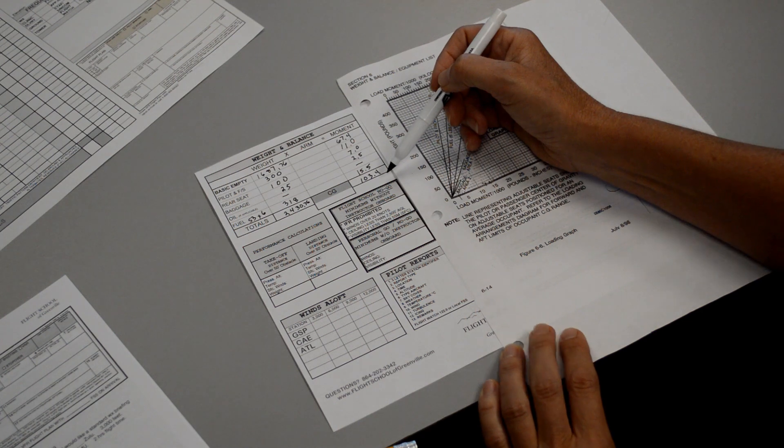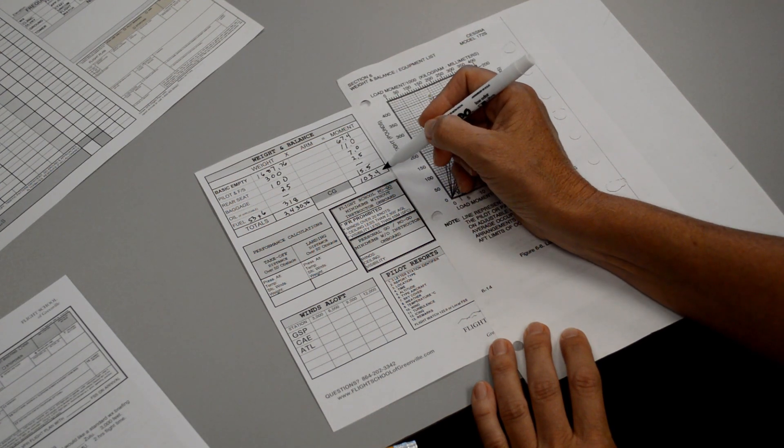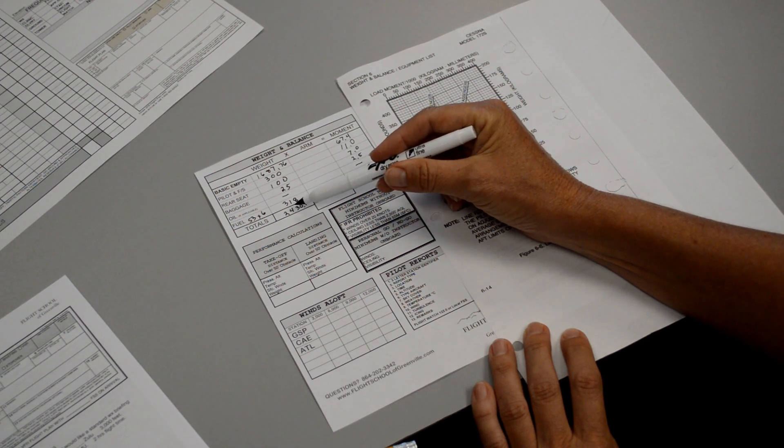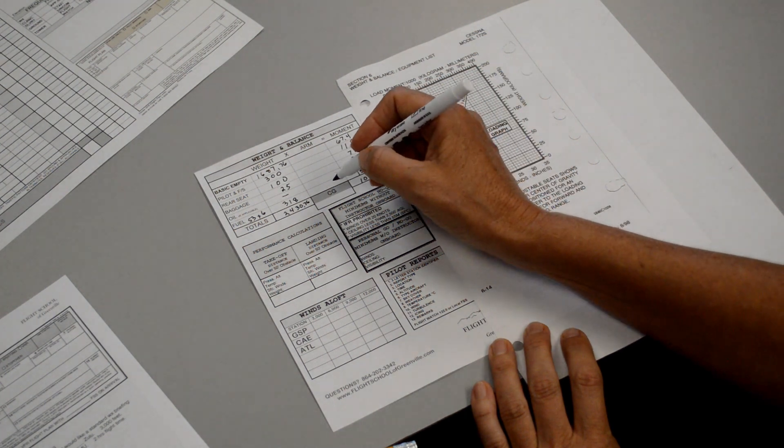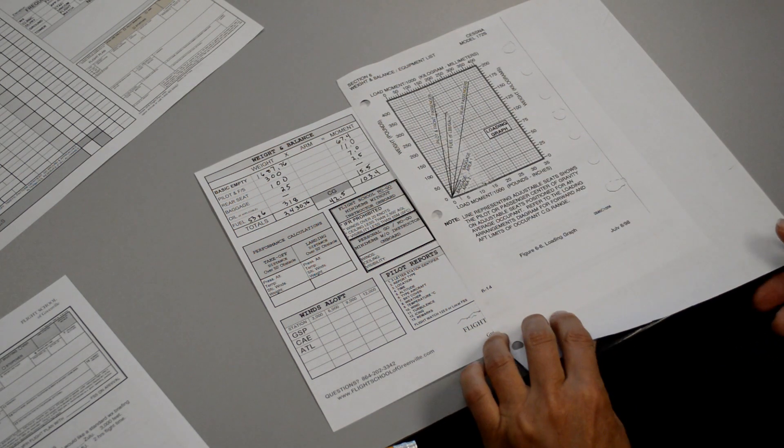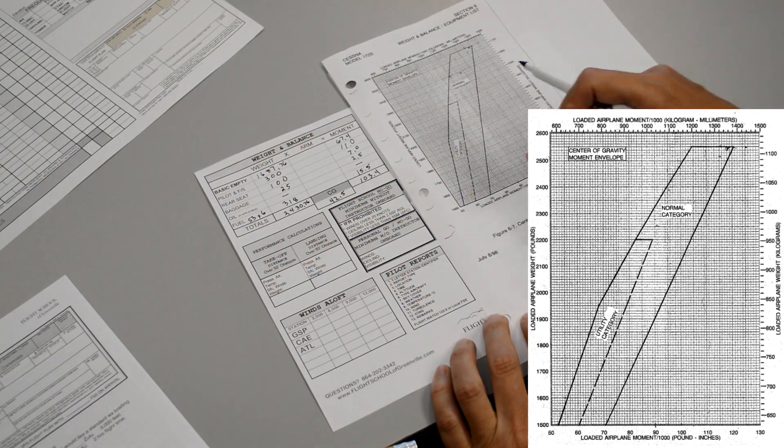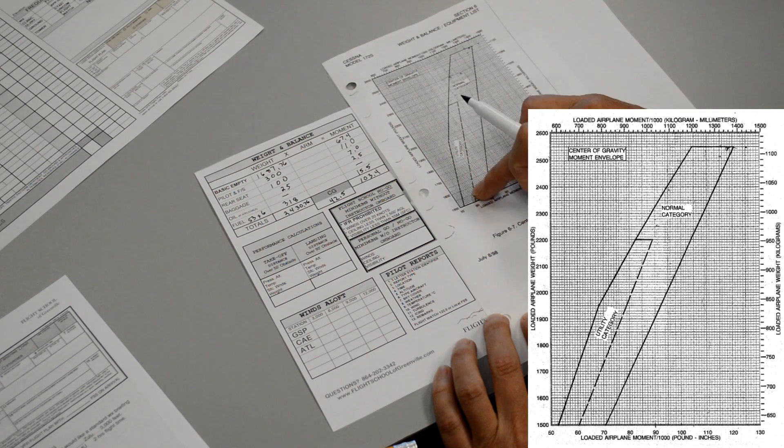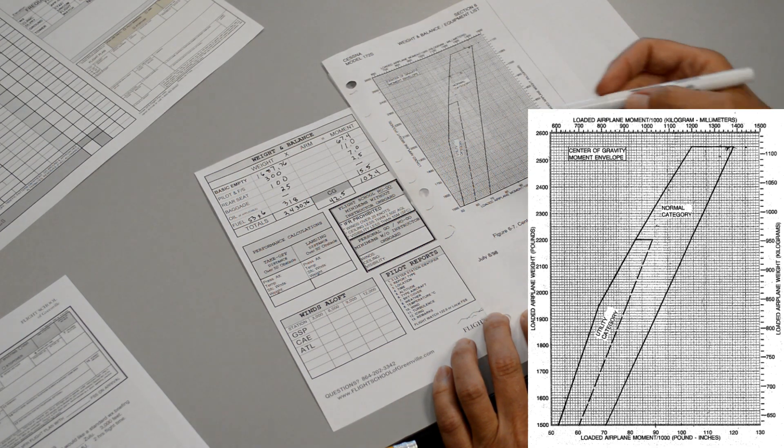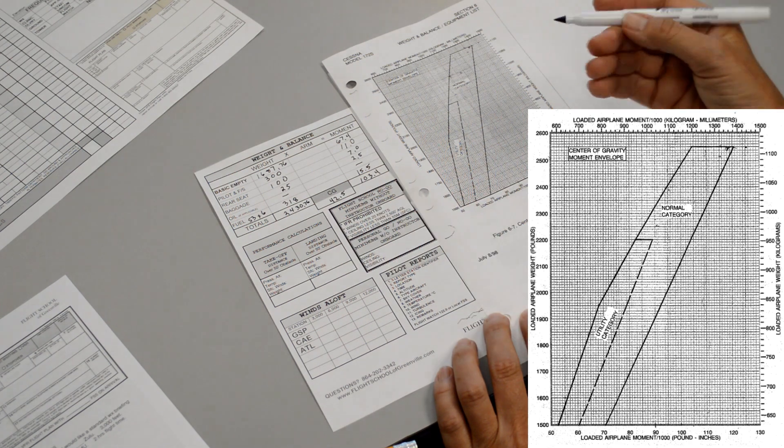We can take this one step further if we need to, to get the CG, the actual center of gravity. The moment, total moment, remember we had divided this by 1,000 so this is actually 103,400 divided by 2,430.76 and then we would get an actual center of gravity of 42.5. With the Cessna 172, that step actually wasn't necessary because the graph that Cessna provides for us, to be sure that we're in the category, the normal or utility category envelope, this graph asks for the total weight and the total moment. But some aircrafts have a graph where it asks for the total weight and the center of gravity, therefore you would have to do that last step. But for Cessna, we didn't really have to.